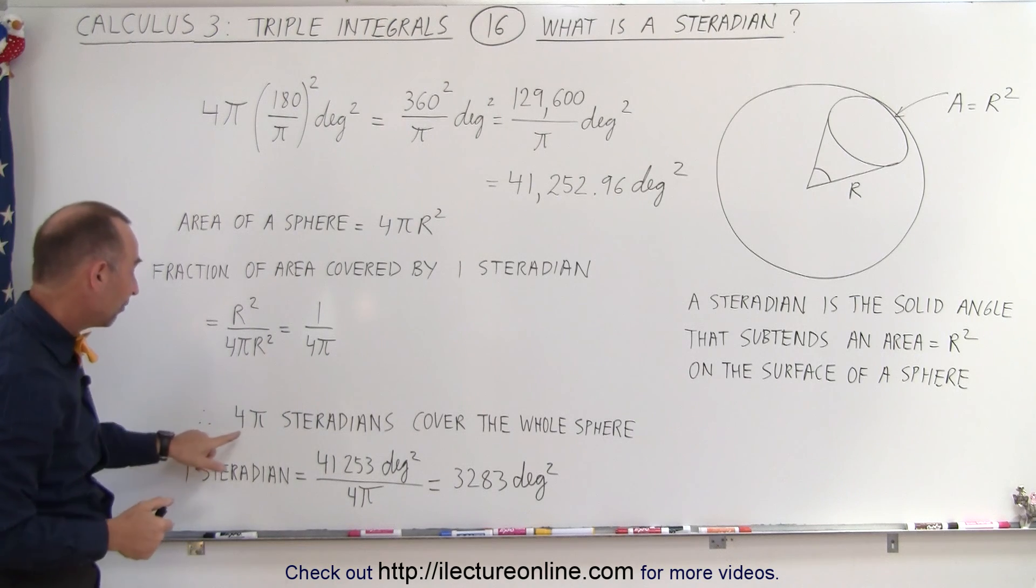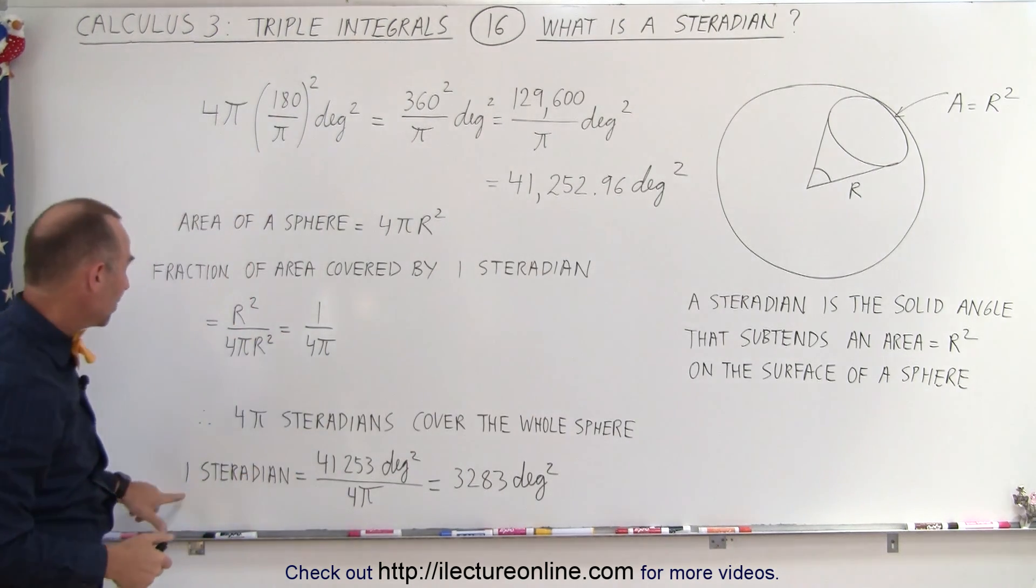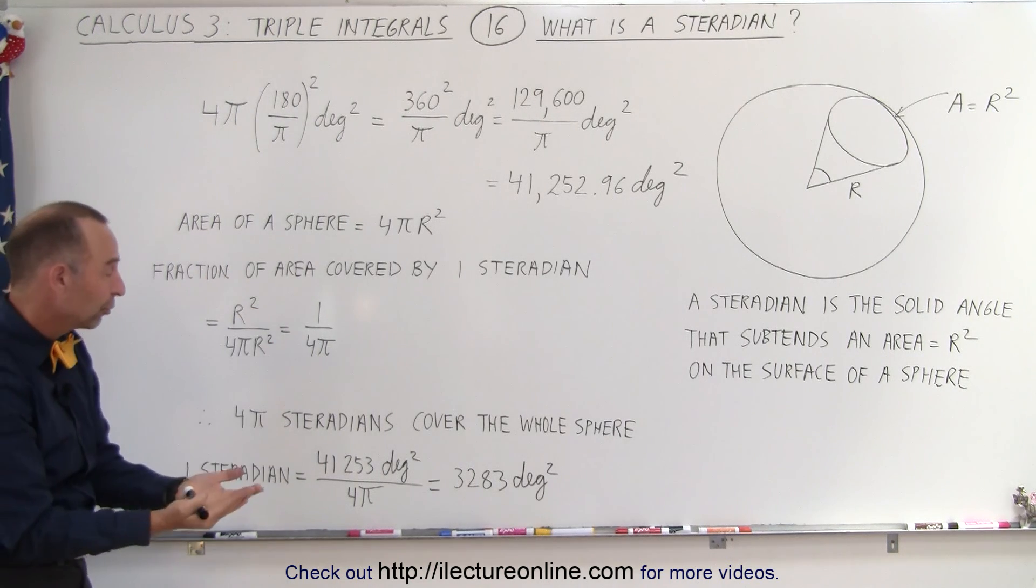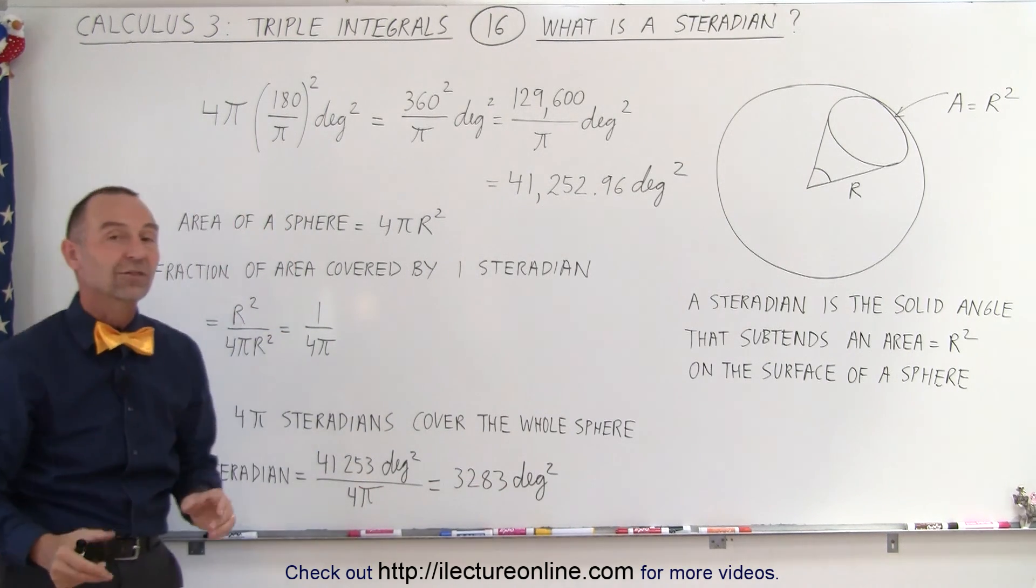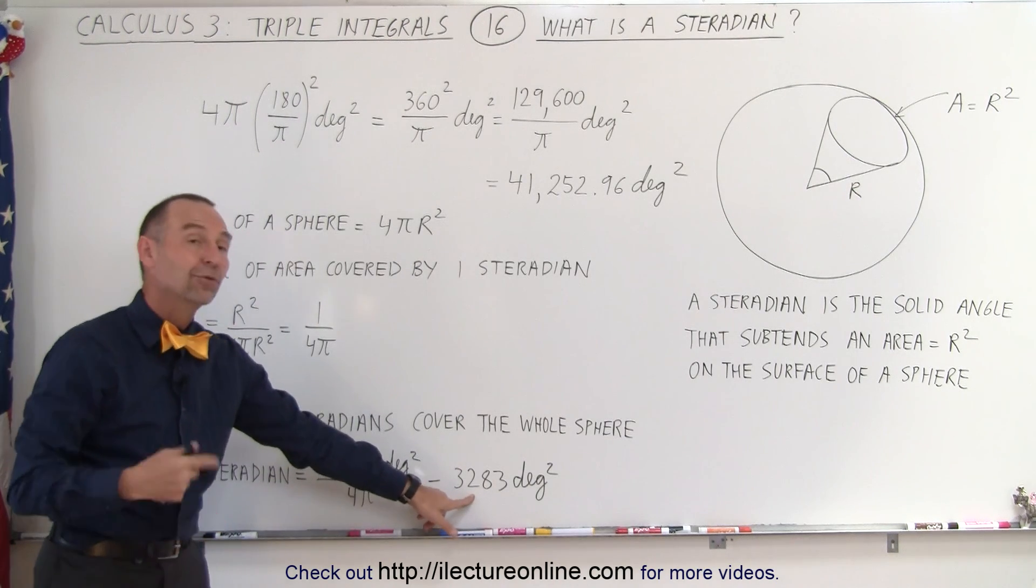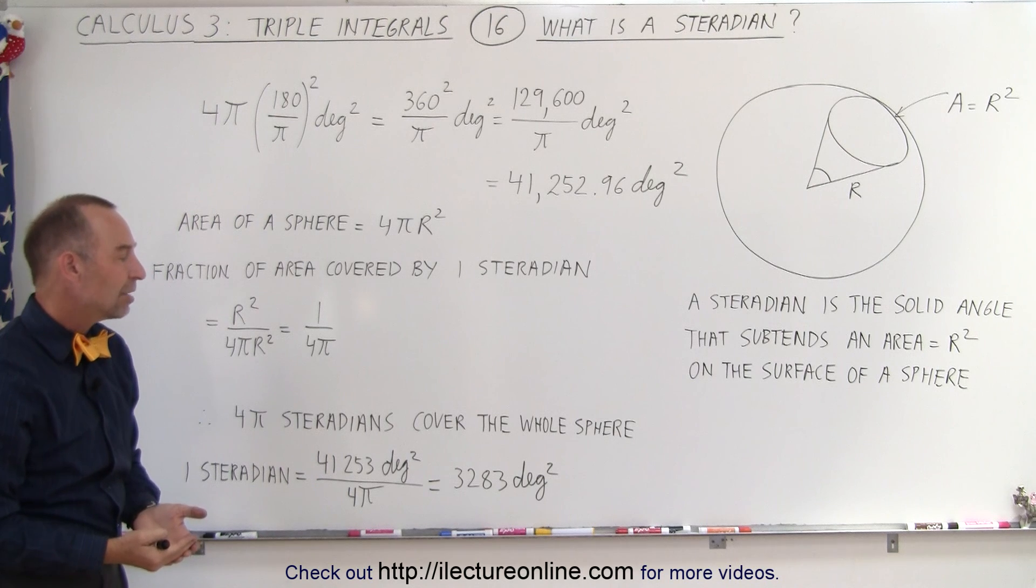which therefore means that 4 pi steradians cover the whole sphere, which means that one steradian is this many degrees, the degrees that cover the whole sphere divided by 4 pi, or 3,283 square degrees. That's the size of a steradian. You take this number times 4 pi,